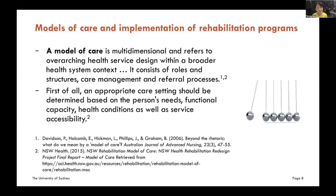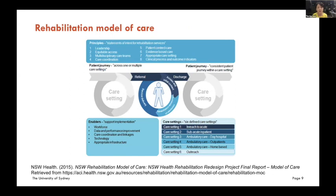When someone has dementia, they don't always go to hospital for treatment. They may see a geriatrician in the hospital, but the referral process for rehabilitation is not always consistent. What's important is to make sure the appropriate care setting is determined based on the person's needs, their functional capacity, health conditions, and service accessibility. If we want to introduce any one of those programs as part of routine healthcare, we can't just plug a program into the healthcare system or aged care system and expect it to work. We need to think about leadership, workforce, and all these other things as part of the planning.